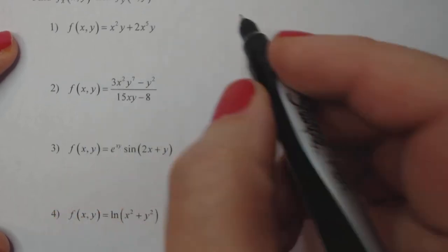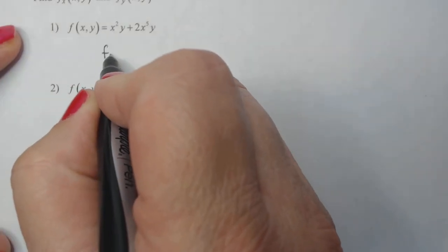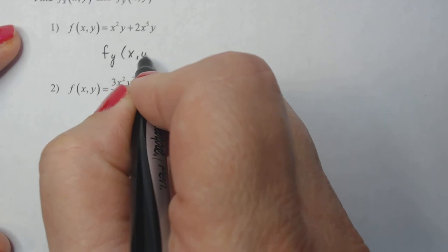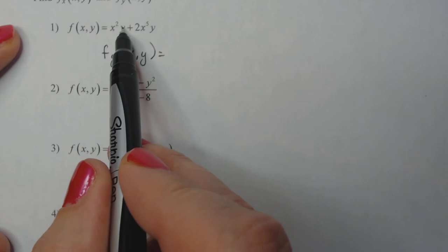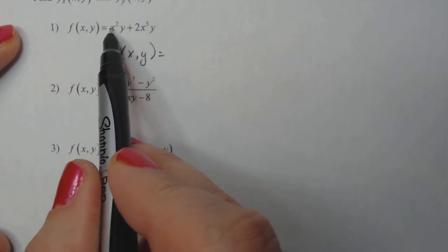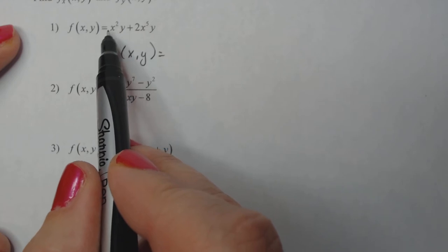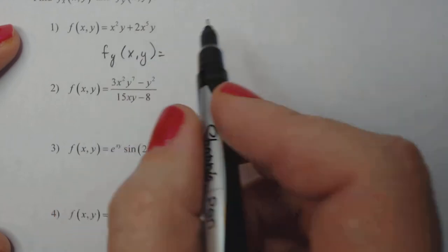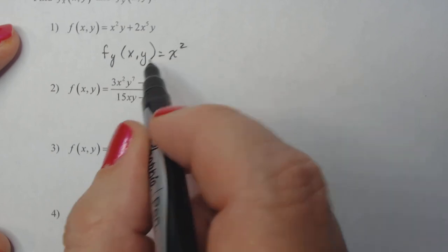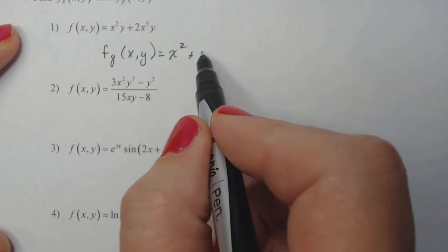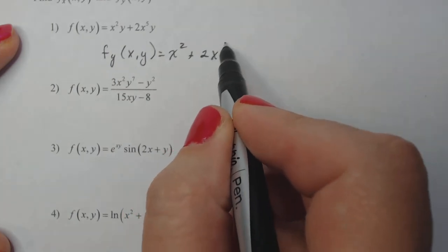I will do one of them first. So I'm just going to do number one, f sub y. All right, so when I look at this term, I see the y variable here. And I have to think of x squared as a constant. So if I want to take the derivative of 2y, that's going to give me the 2. So my derivative with respect to y, that term is just x squared. The derivative with respect to y here is going to be 2x to the fifth.